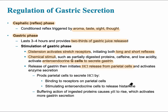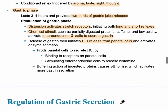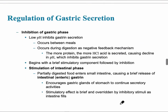This prods more parietal cells to secrete hydrochloric acid. It binds to receptors and causes a cycle where more and more is produced as needed, so the proteins are broken down. This describes the regulation of gastric secretion.